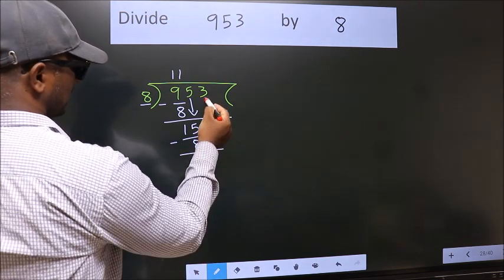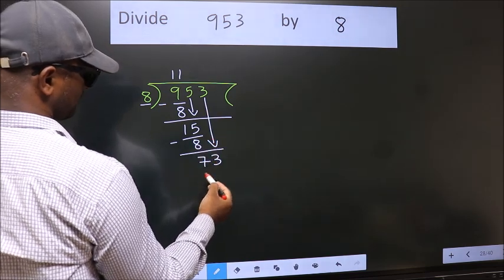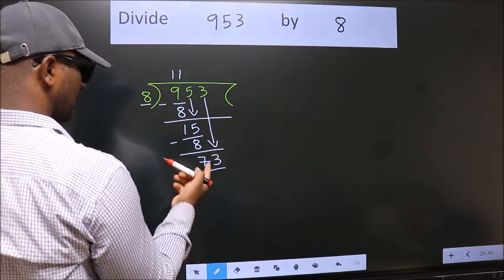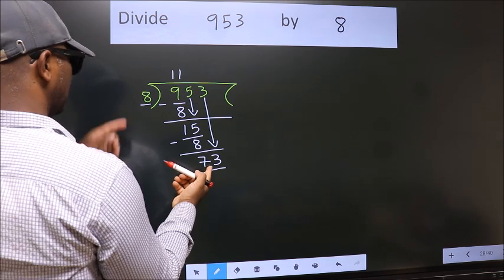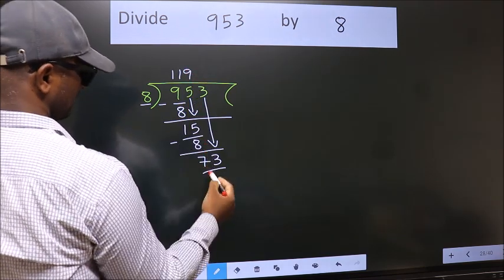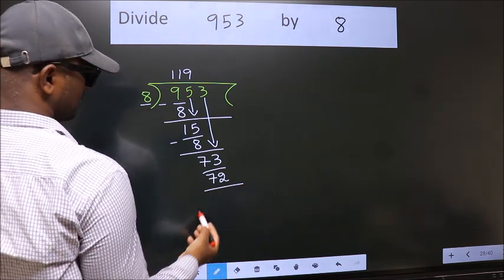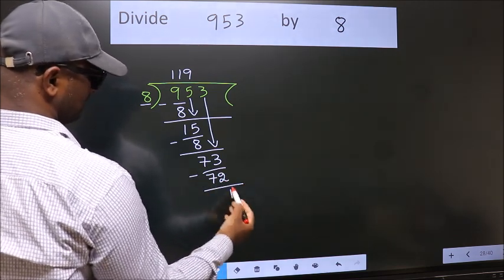After this bring down the beside number. So 3 down. So 73. A number close to 73 in 8 table is 8 nines 72. Now we subtract. We get 1.